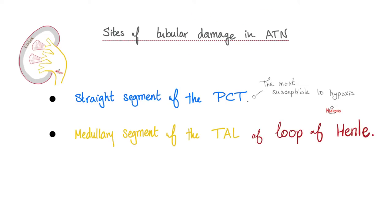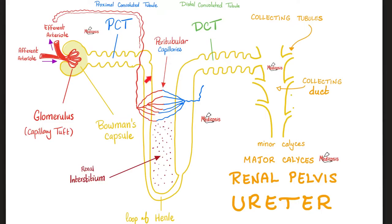More specifically in the kidney, it is the straight segment of the proximal tubule and the medullary segment of the thick ascending limb of the loop of Henle that are most at risk. If forced to choose the single most vulnerable, it would be the straight segment of the proximal convoluted tubule, as it is the most active. This segment lies in the cortex — the outer layer — which is why the cortex is the most vulnerable part of the kidney to hypoxia, more so than the medulla.